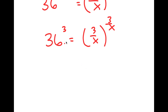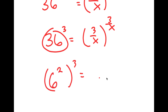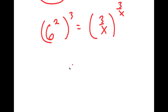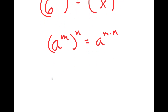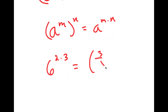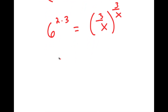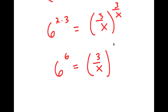From here, I can rewrite 36 as 6 squared. So I get 6 squared to the power of 3, which equals 3 over x to the power of 3 over x. Applying the rule a to the power of m to the power of n equals a to the power of m times n again, I get 6 to the power of 2 times 3. And 2 times 3 is 6, so I get 6 to the power of 6 is equal to 3 over x to the power of 3 over x.